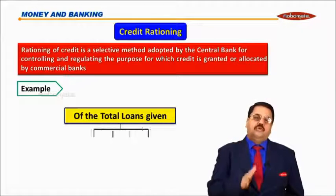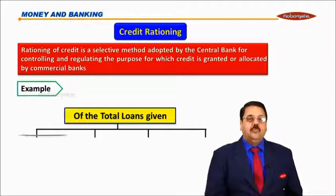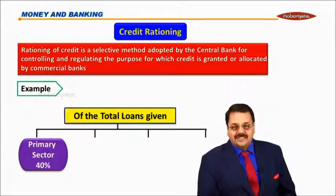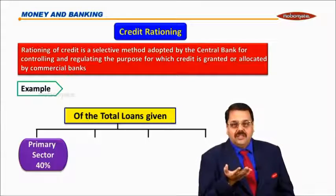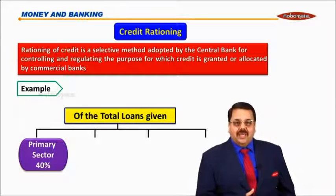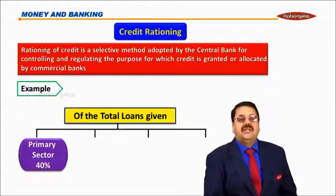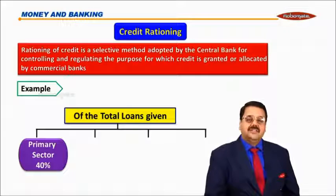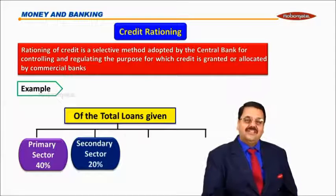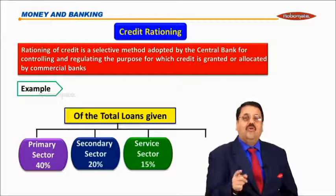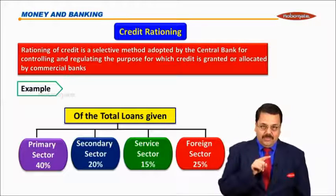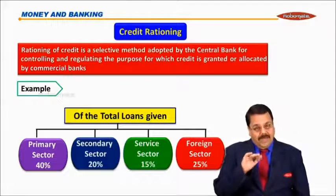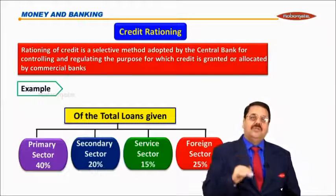For example, of the total loans given, distribute the money: primary sector gets priority because if the primary sector doesn't develop, people will not get food to eat. So first, the agriculture sector, then the secondary sector, service sector — all should get a contribution of credit. Also the foreign sector, for example 25%. This will ensure balanced development of all sectors and proper development of the country.